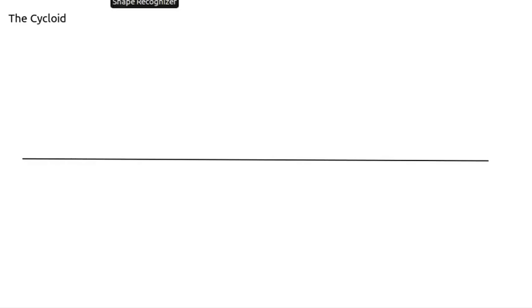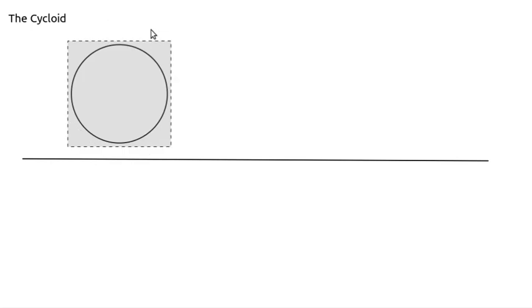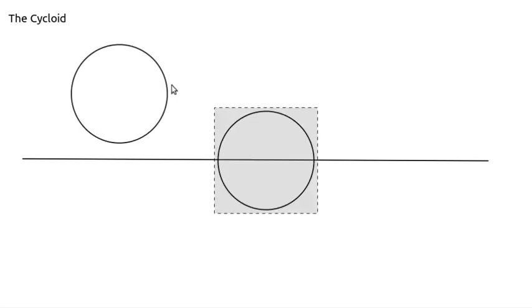Imagine that this horizontal line I just drew is the ground, and suppose we have what we'll think of as a wheel or a ball or something. Let's just say it's a wheel, something circular rolling along the ground.